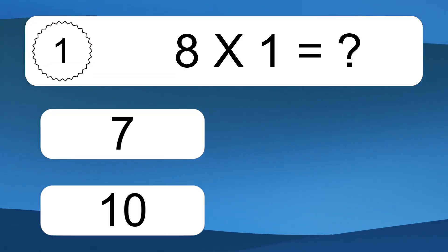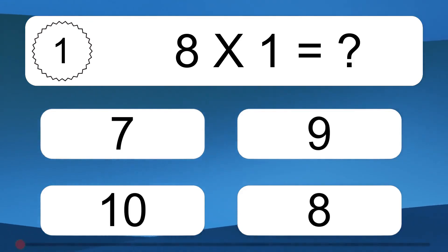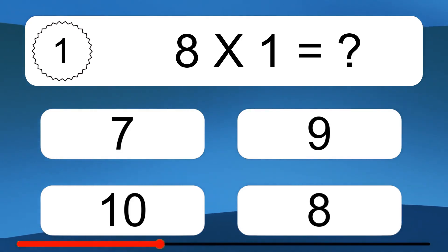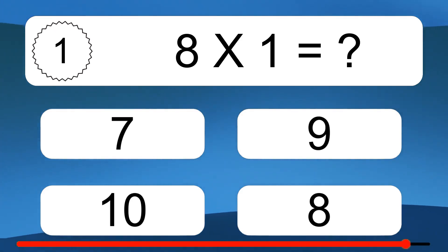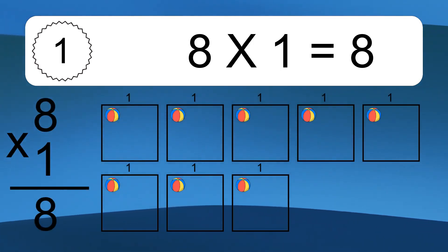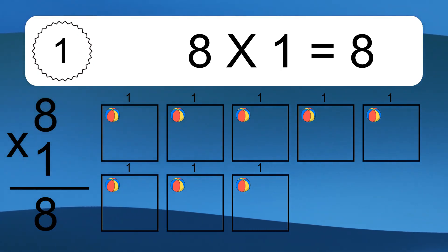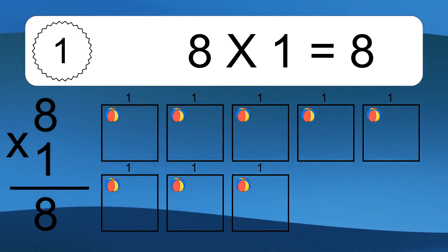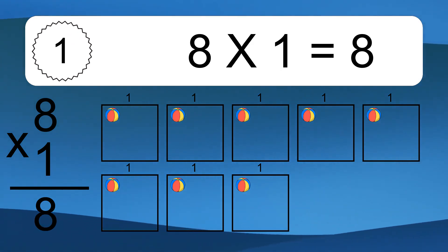8 times 1 equals what? 8 times 1 equals 8. We have 8 boxes and each box has 1 colorful ball inside. If you count all the balls in all the boxes together, you will have 8 times 1 balls. This equals 8 balls.